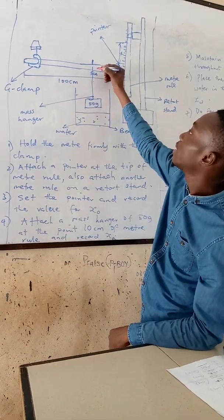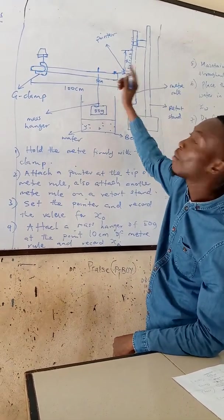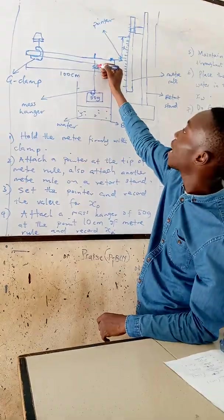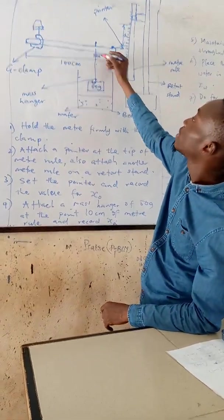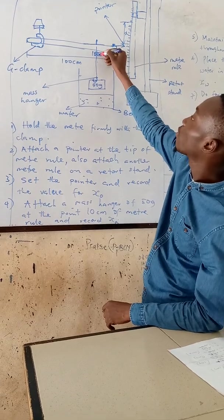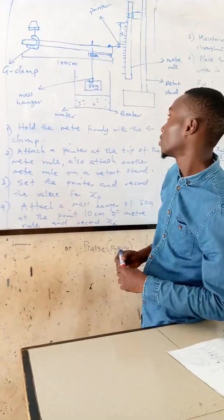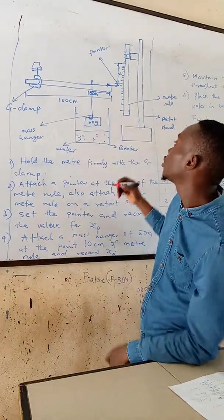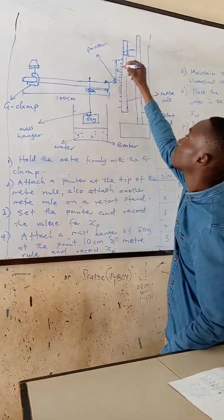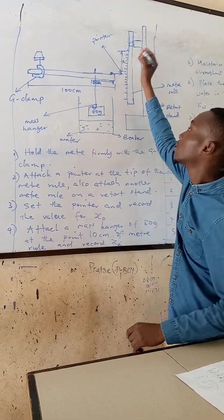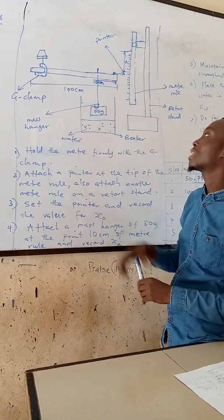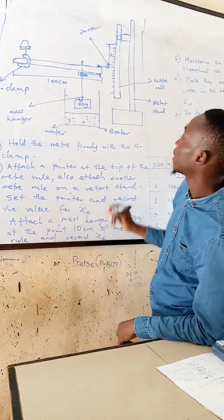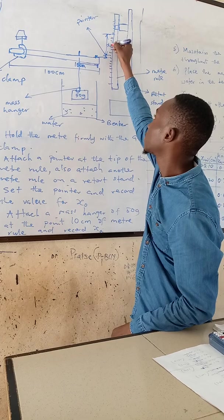Then after that, we also have a thread that we hang our mass. In this case, our mass hanger of about 50 grams is going to be hanged a distance of 10 centimeters away from the meter rule. Then after hanging that at 10 centimeters, we are going to measure the distance from here to here when the mass has not been hung. And that is what we call our X0.